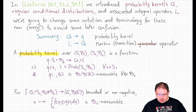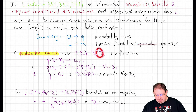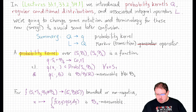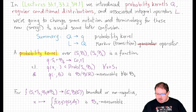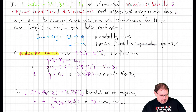Let's go through the basics one more time. A probability kernel over two measure spaces is a function of the variable of the first space and events in the second space, taking values in the unit interval, with the property that for each fixed s in the first state space, Q is a probability measure on the second state space, and for each fixed event in the second sigma field, Q is a measurable function of the first state space.